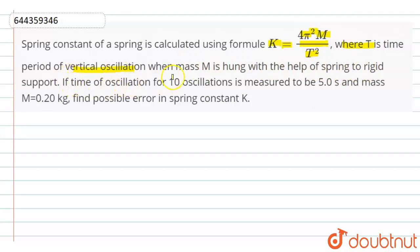If time of oscillation for 10 oscillations is measured to be 5 seconds and mass M equals 0.20 kg, find possible error in the spring constant K.